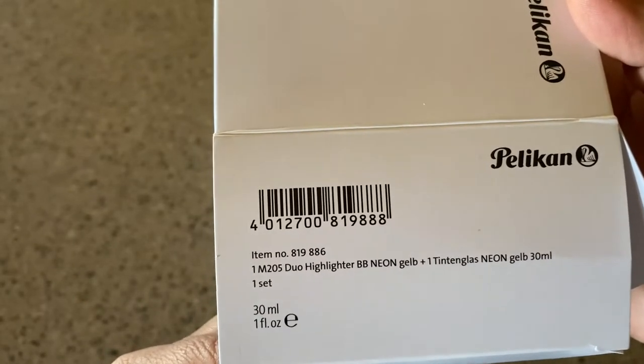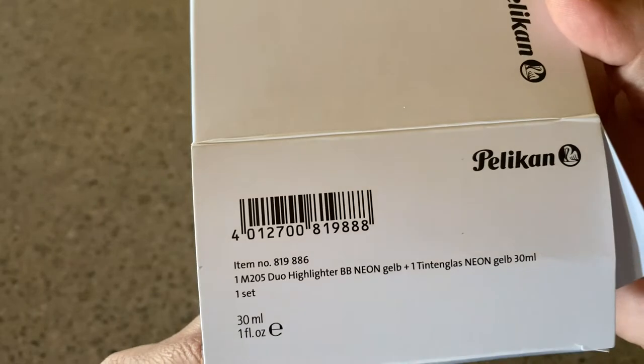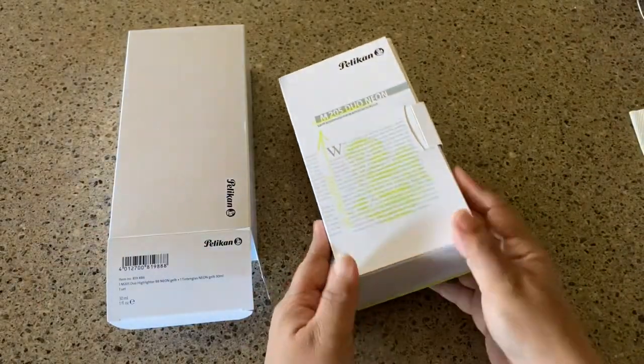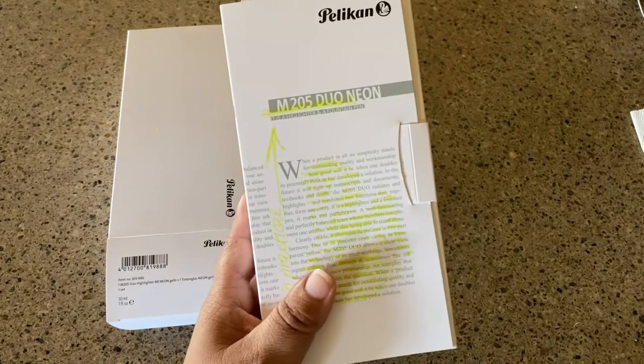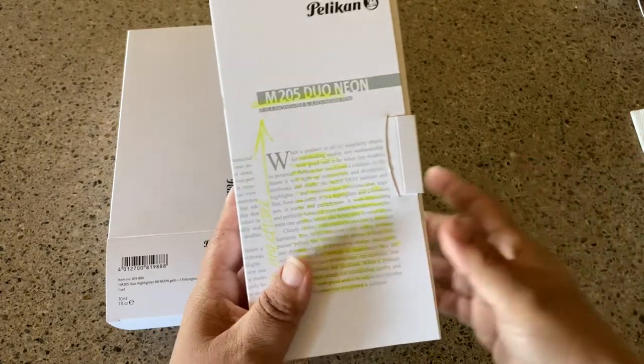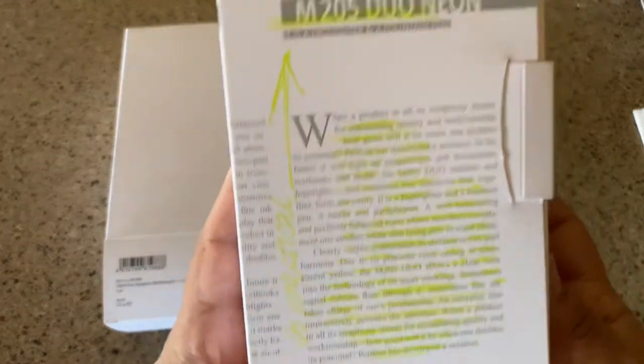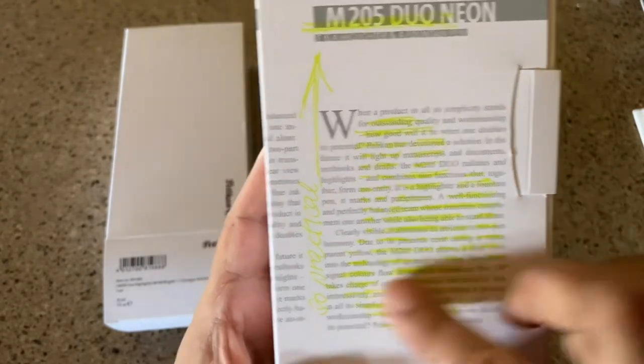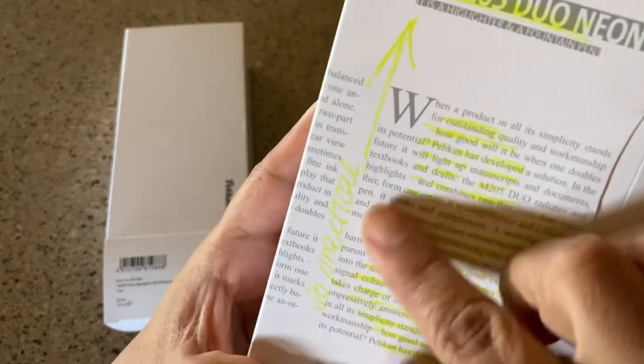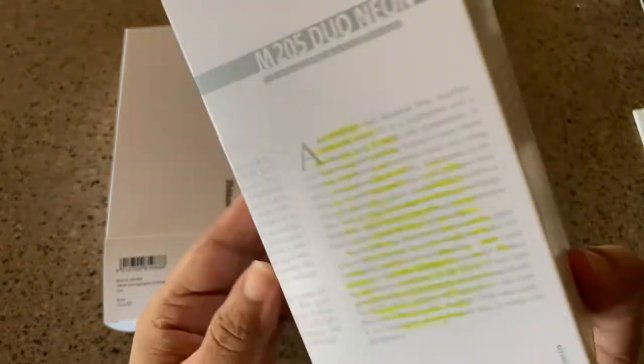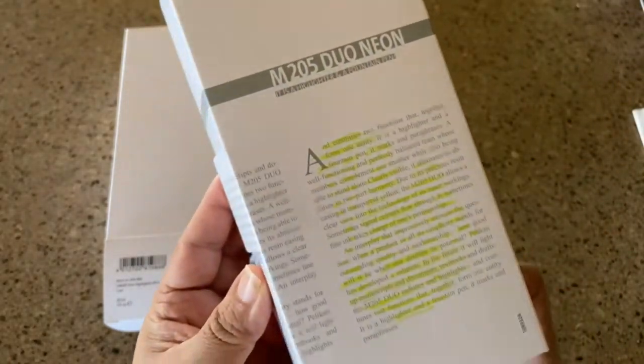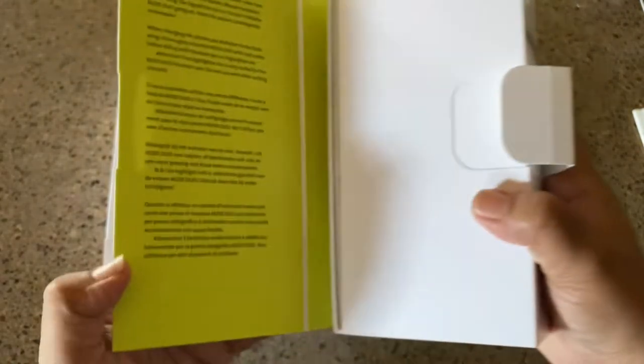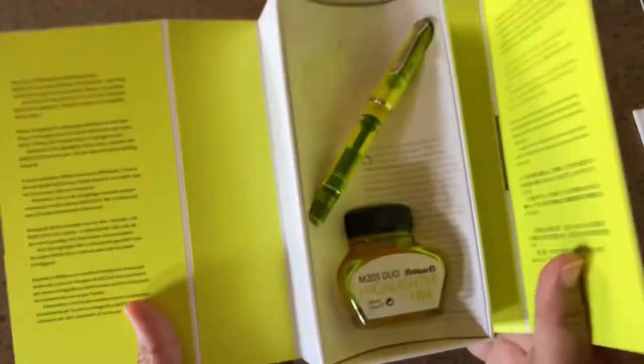It says M205 Duo Highlighter BB Neon Gel B. You're going to see a neon pen and the neon ink that goes with it. It's a really neat looking box that shows you can not only write with the pen but also highlight.